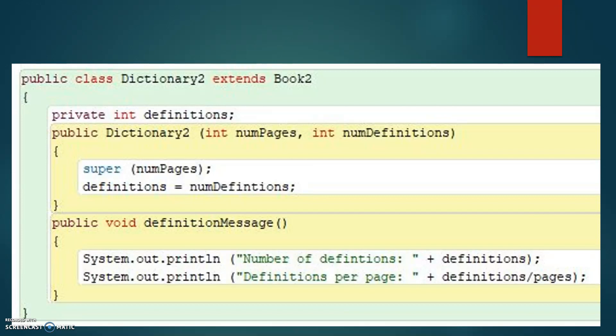The Dictionary2 constructor takes two integer values as parameters for the number of pages and definitions in the book. The Book2 class already has a constructor that sets up the parts of the dictionary that were inherited, but we cannot invoke it directly.